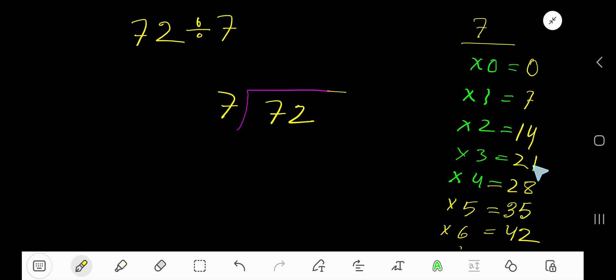7 plus 7 is 14, 14 plus 7 is 21, 21 plus 7 is 28. Okay, 7 goes into 7 how many times? 1 time. 1 times 7 is 7. Subtract to get 0. Bring down the 2, so 1 remainder 2 is your answer.